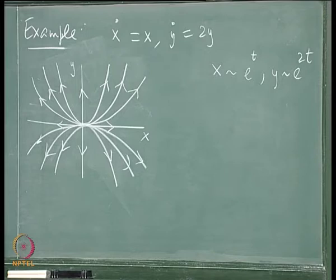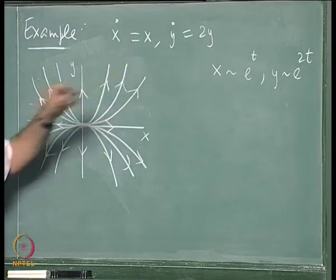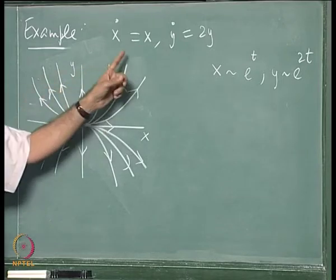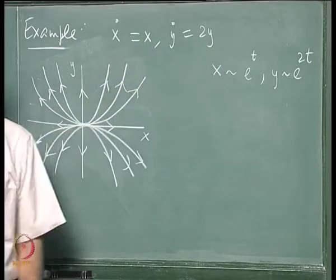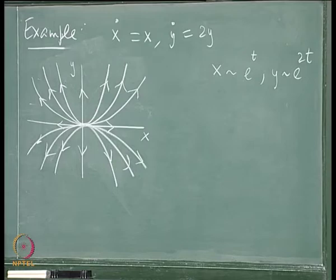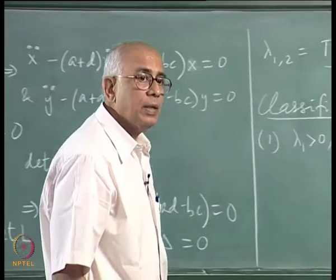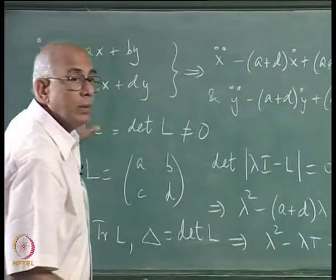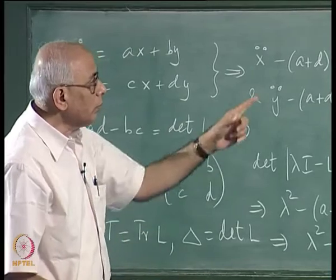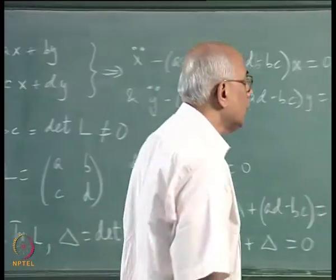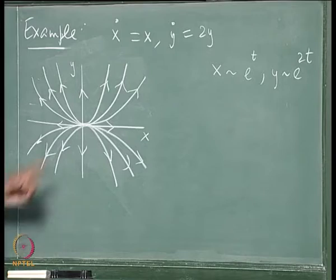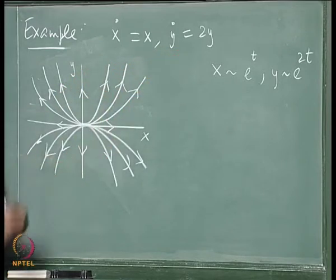What would happen if you did not have decoupled equations? In the examples above, the matrix is already diagonal — the coefficient of y is missing in the first equation and x is missing in the second. But in general, L has both x and y on both sides. What would the flow look like in that case? Can we deduce the general flow from the decoupled case?